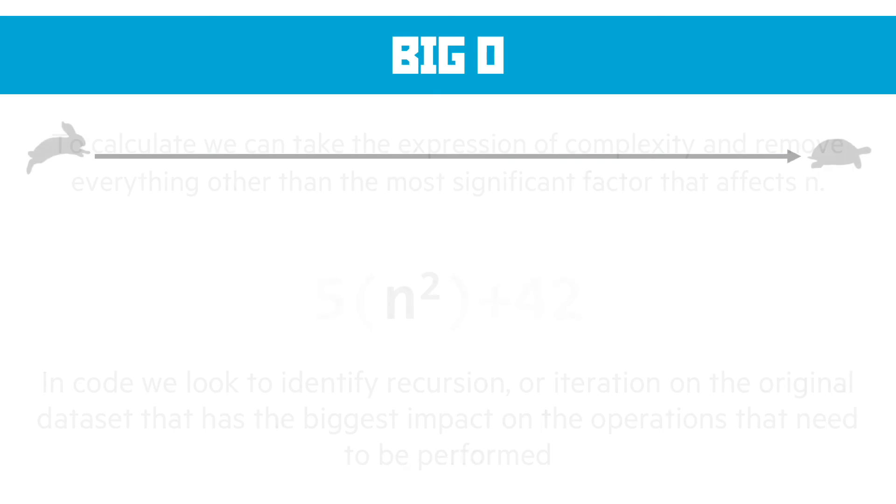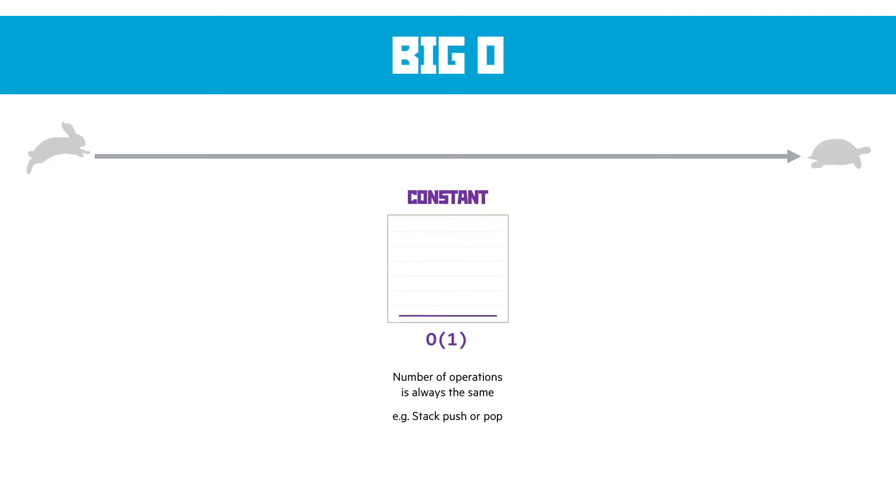Now in code, we look to identify recursion or iteration on the original data set that has the biggest impact on the operations that need to be performed in an effort to identify how complex that is in terms of big O. Let's start going through the forms of big O, and I'm going to put them on a scale of fastest to slowest. We'll start with constant complexity. Now we illustrate this with big O, 1 in brackets. Now this means the number of operations is always the same. No matter how big the data set gets, it's going to take me the same amount of operations to perform the action. Now in our case, the only good example of this is using a stack to push or pop. It's always going to take the same amount of operations to put something onto the stack or take something off.